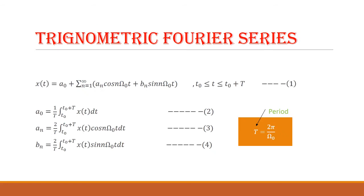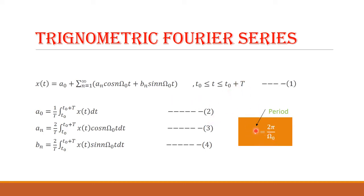First, we are going to see trigonometric Fourier series. The general equation is: x(t) = a₀ + summation from n=1 to infinity of [aₙ cos(nω₀t) + bₙ sin(nω₀t)], where the limit t extends from t₀ to t₀ + T, and T is the period. To calculate the period: T = 2π / ω₀.